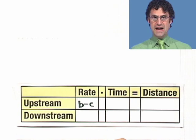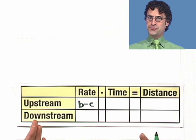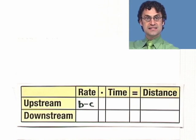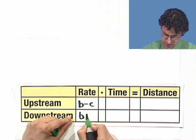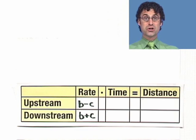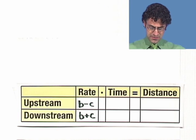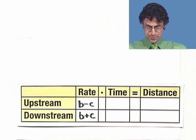What about his rate when he goes downstream? Well now the current is his friend. He actually gets the current as extra speed. So not only does he go Ben's speed in still water, but he actually gets to increase that by the actual current. So in that case, the downstream, his rate is b plus c. Okay, cool.